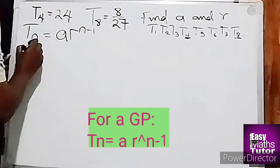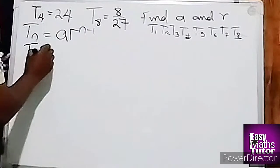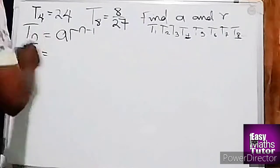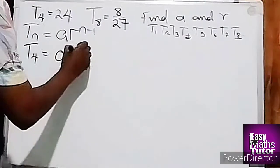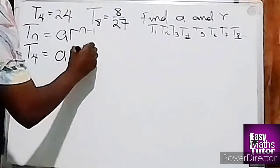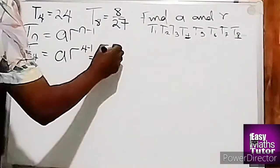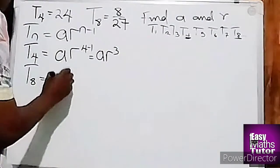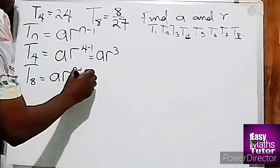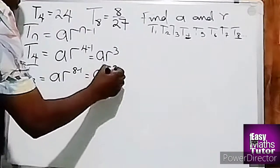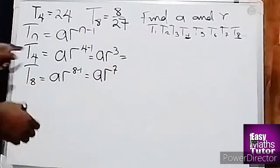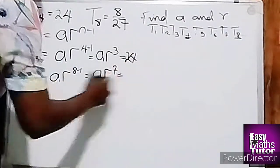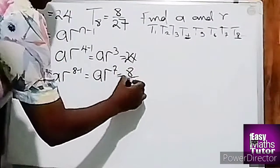But if we're finding the function for T4, that means we're going to substitute 4 as n. So we'll say ar^(4-1), which is equal to ar³. Then T8 is equal to ar^(8-1) raised to the power 7. And we know that T4 is 24, and T8 is 8 over 27.